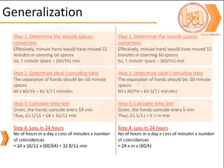To finish, we would need to find the loss in 24 hours. That is the number of hours in a day, 24, times the number of minutes that is being lost, in this case m minutes, and the total number of such coincidences that might happen, which is 60 by k.